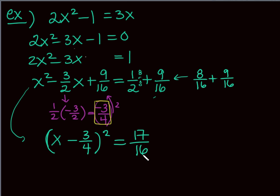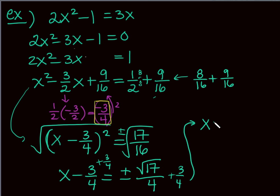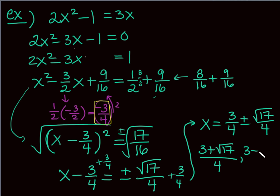So (x - 3/4)² = 17/16. Square root both sides with plus or minus: x - 3/4 = ±√17/4. Adding 3/4 gives x = 3/4 ± √17/4, or combining over the common denominator: x = (3 ± √17)/4. Those are my two irrational solutions.